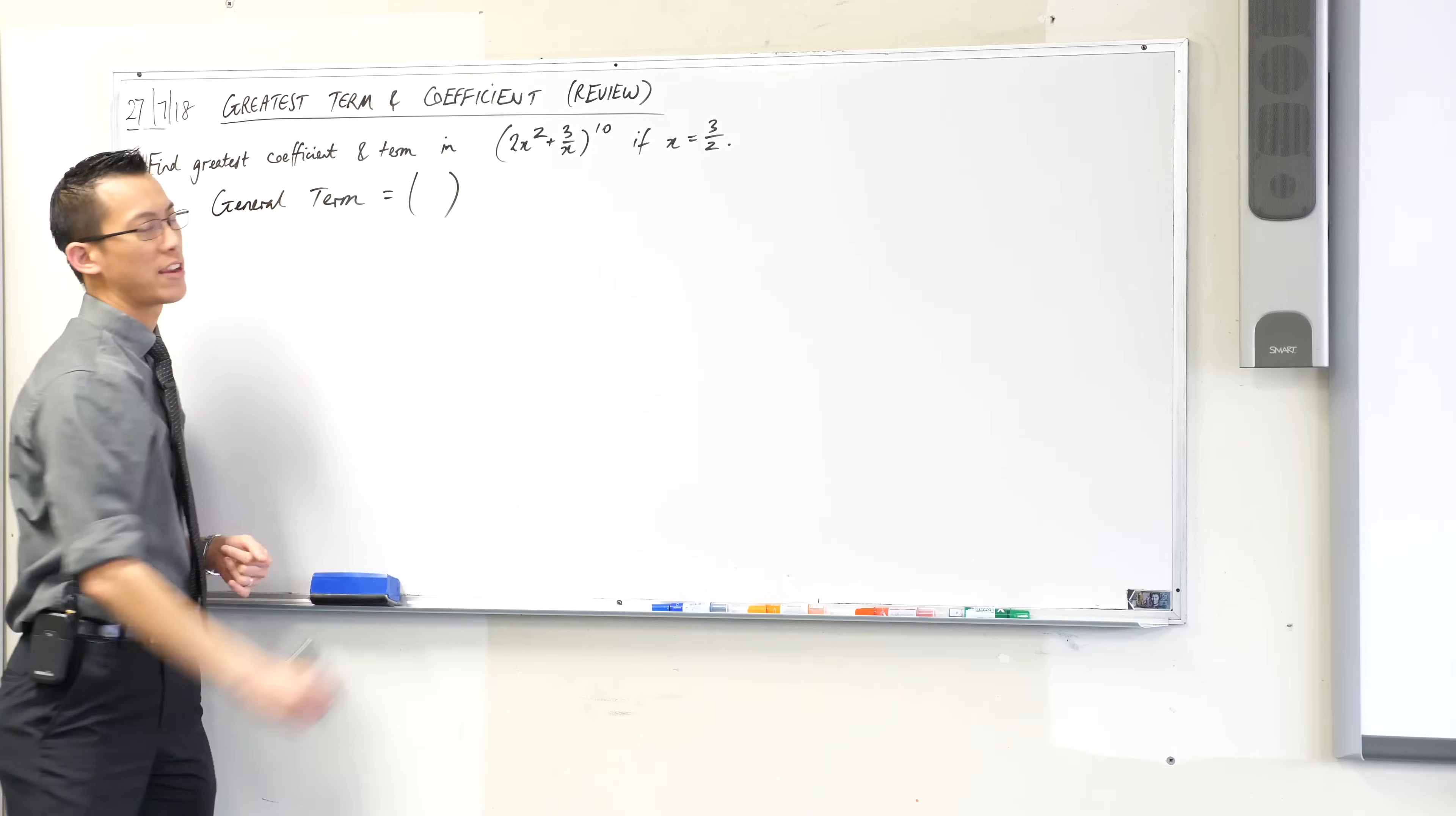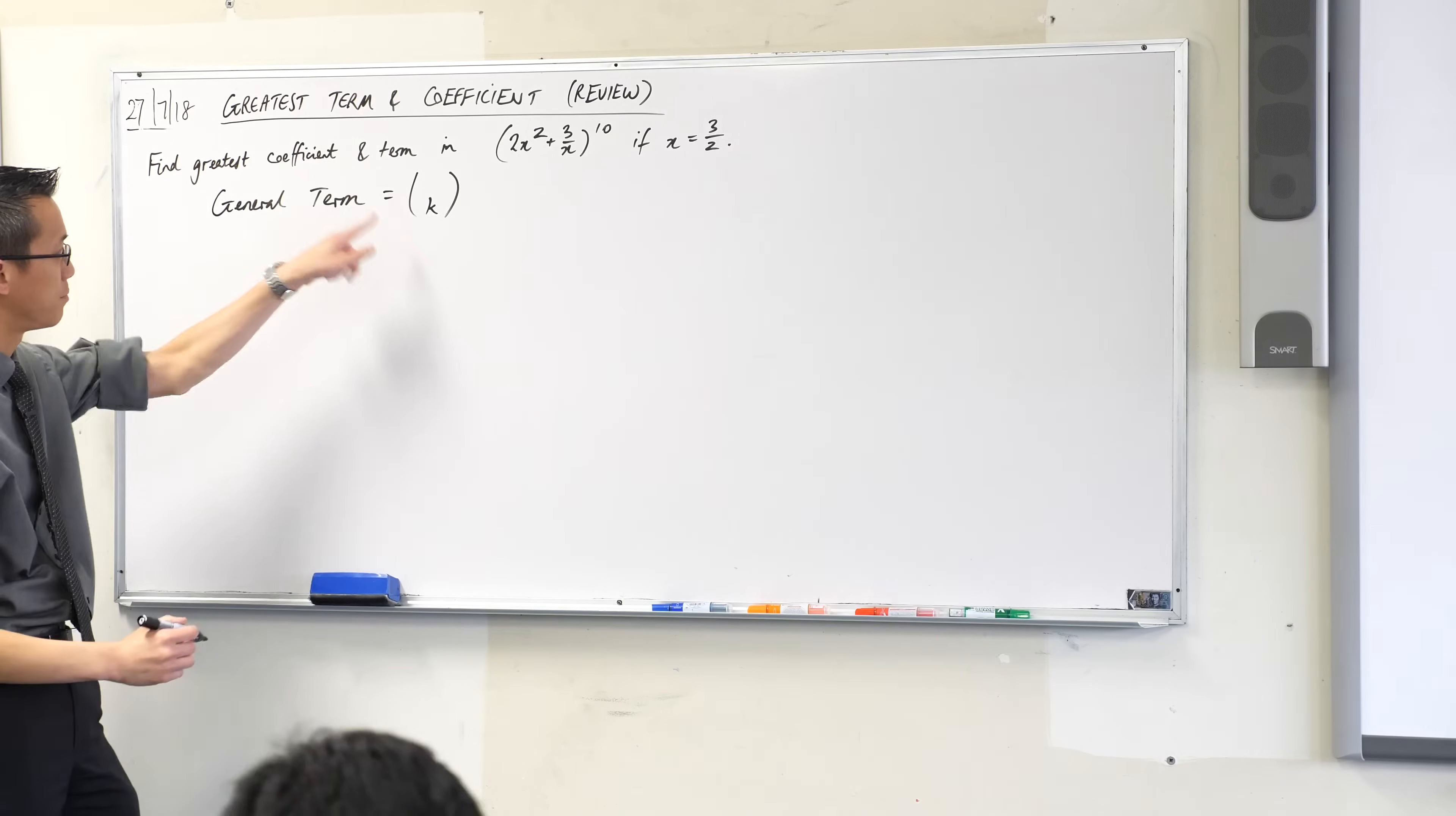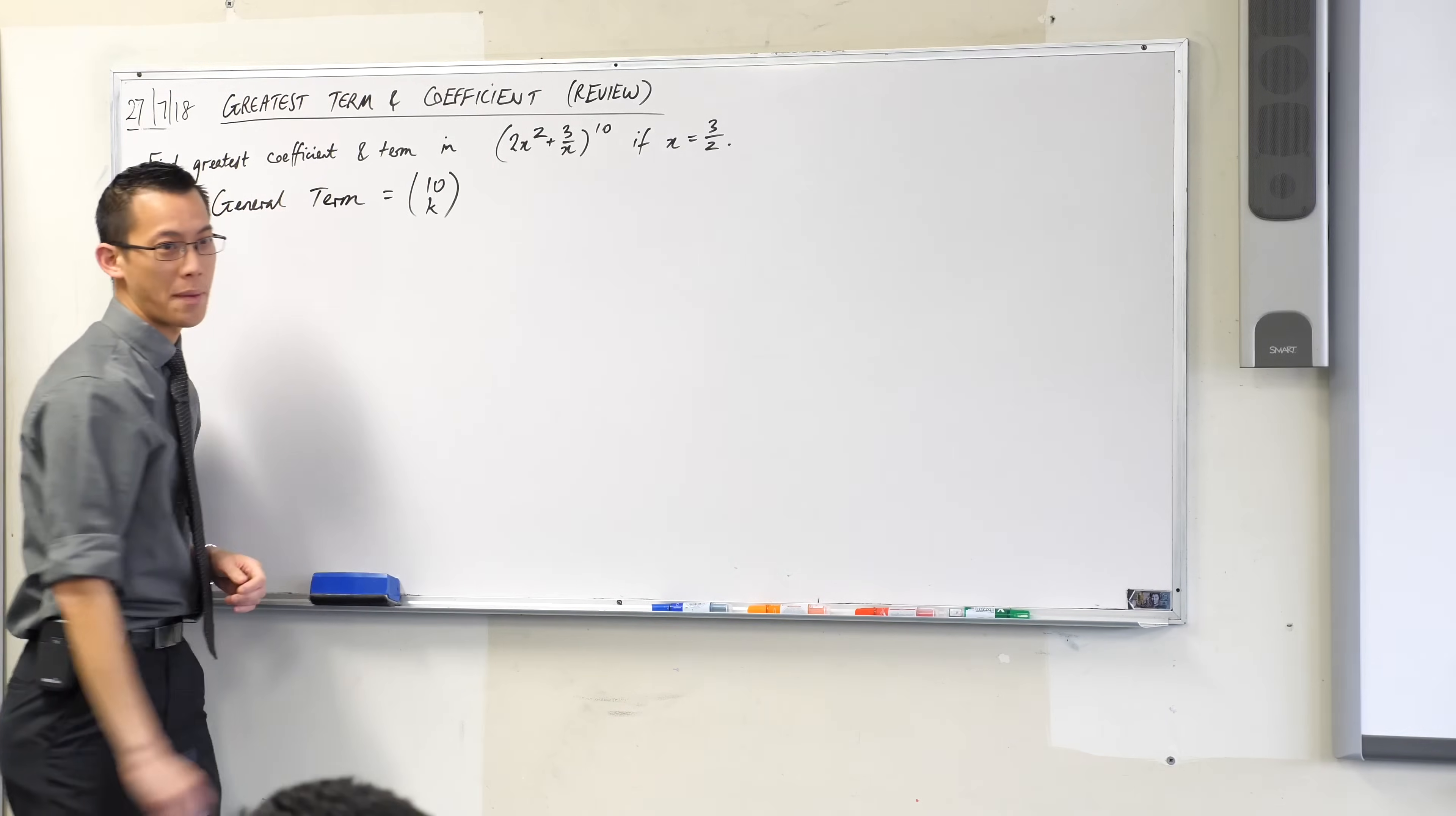The first one will be the binomial coefficient. If this is the general term it's going to be the kth term, but what will the top of the binomial coefficient be? In this case it's going to be a 10. Very good, and I get that from the power.